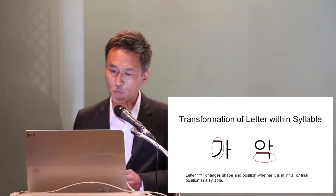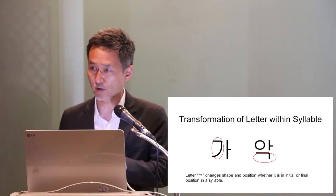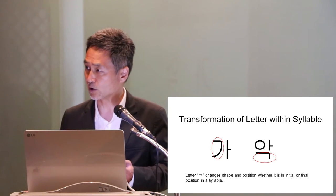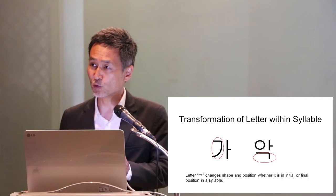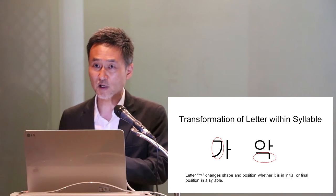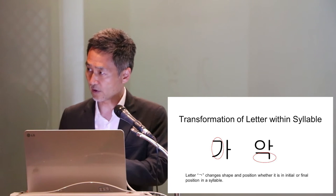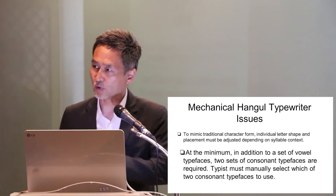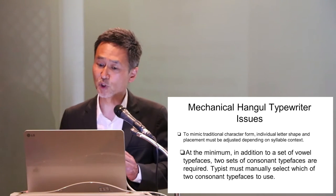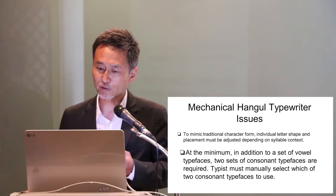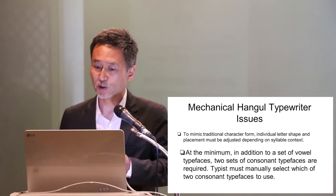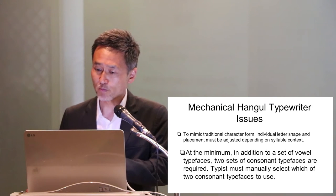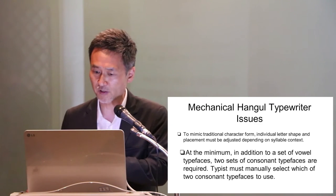Let me explain with an example. Looking at two syllables, I've circled in red the letter ㄱ, which corresponds to the letter K in the English alphabet. Even though they are the same letter, they appear slightly differently — their positions and shapes are a little bit different. So in order to handle these variations, at minimum the Korean typewriter had to have two sets of consonant typefaces in addition to a set of vowel typefaces, and the typist had to manually select which consonant typeface to use.